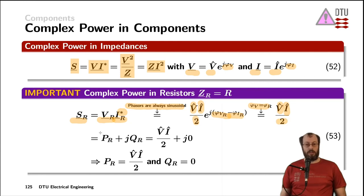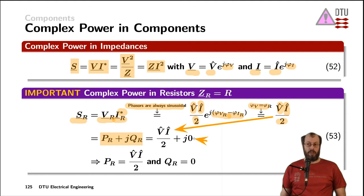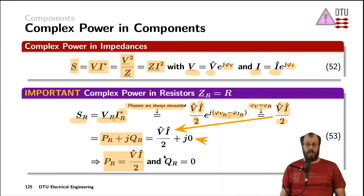We can also write the complex power in a resistor as its real part plus J times its imaginary part. Since the equation is real only, the imaginary part is automatically zero. That proves that through the phasor calculation of power, we have the peak voltage across the resistor times the peak current through the resistor divided by a factor of 2 as the average power in a resistor, and the reactive power in a resistor is zero.